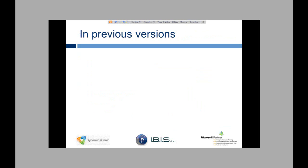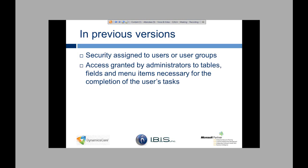In previous versions, security was assigned to users or user groups. These user groups were created by administrators and no defaults were provided, so administrators had to create any sort of role needed to set up security, which is a lot to do. Access was granted by administrators to tables, fields, and menu items necessary for the completion of tasks. The permissions for the user groups were manually chosen by the administrator, which is cumbersome because you have to define all of these roles for the group manually.